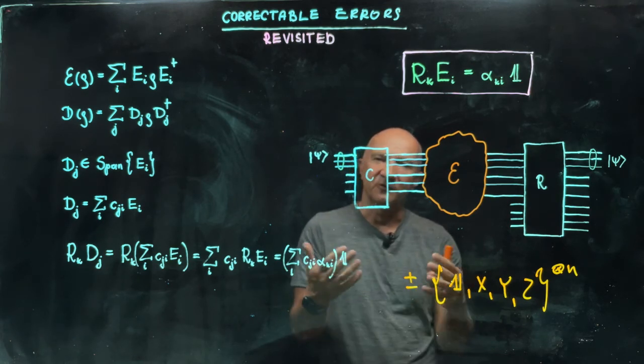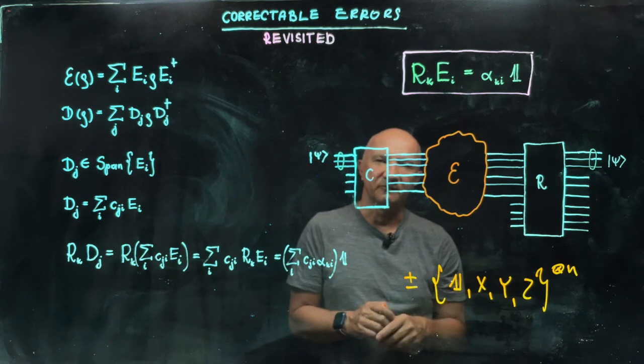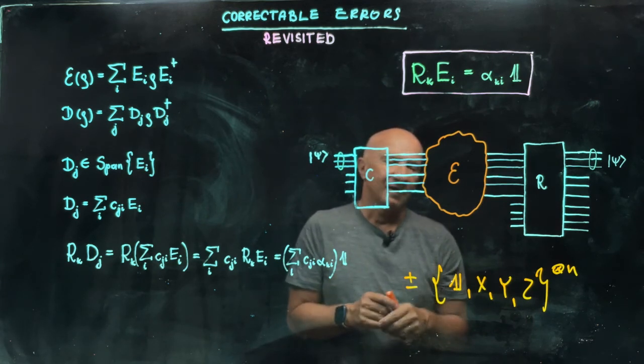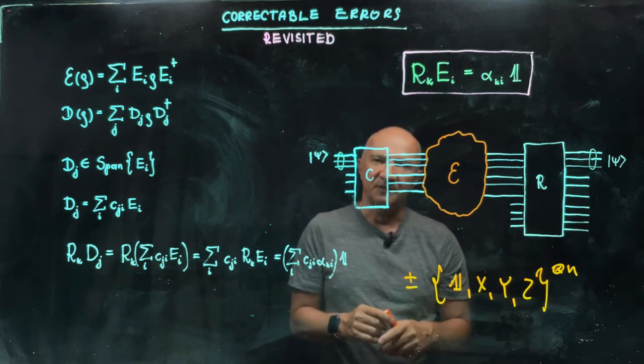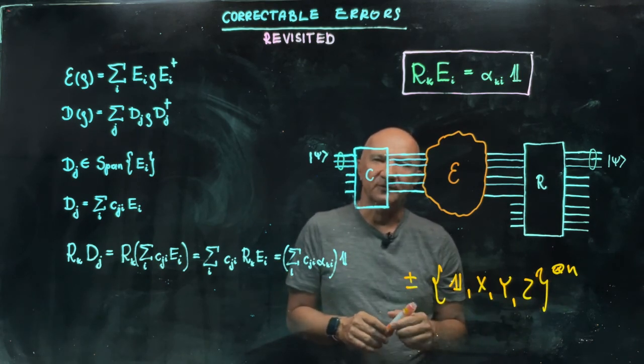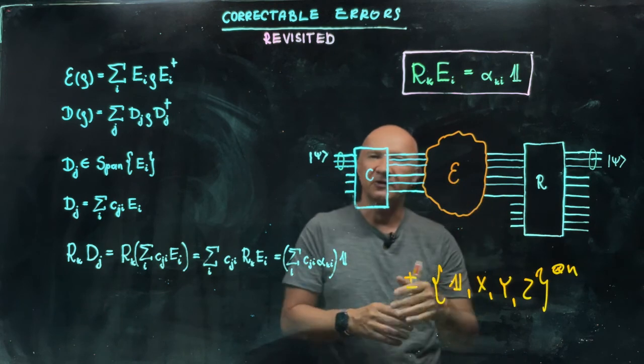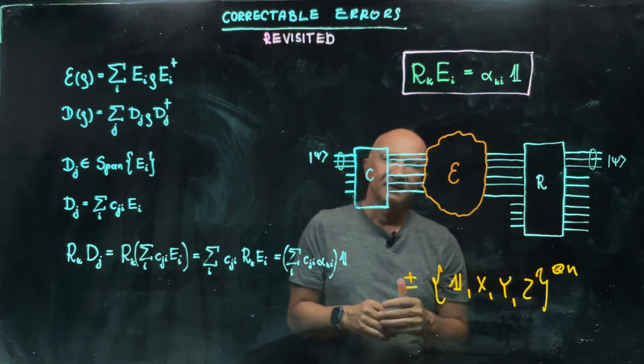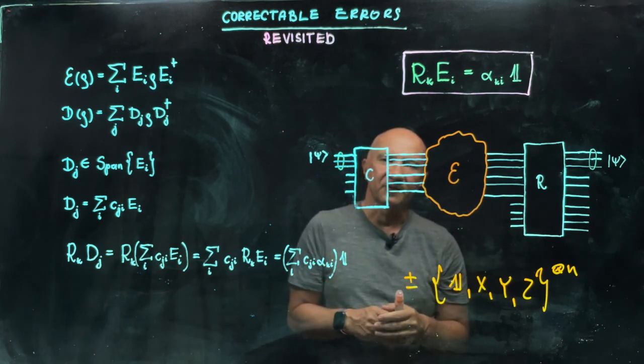One of them is that they form a nice basis in the set of operators acting on n qubits. And so we are going to explore the mathematical structure of those Pauli operators and to have a little bit more insight about constructing quantum error correcting codes.